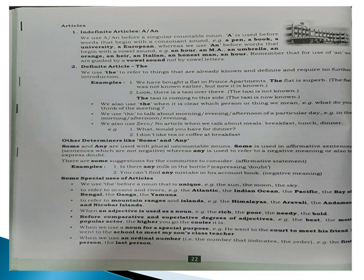Another example: 'There is a taxi over there' — we don't know which taxi, so we use indefinite article 'a' since the taxi word starts with a consonant. Then: 'The taxi is coming to this side' — now we are talking about that particular taxi which is coming to this side, so it is definite and we use 'the'.